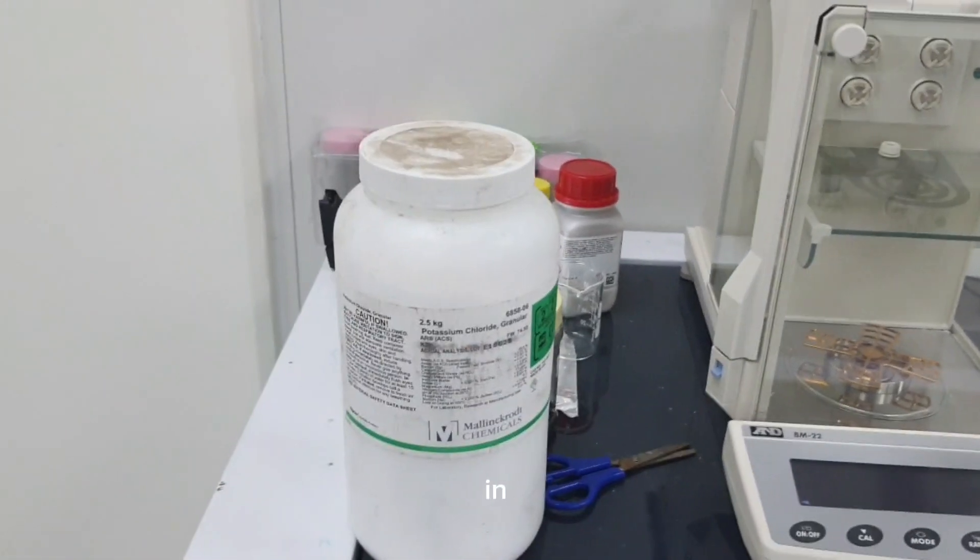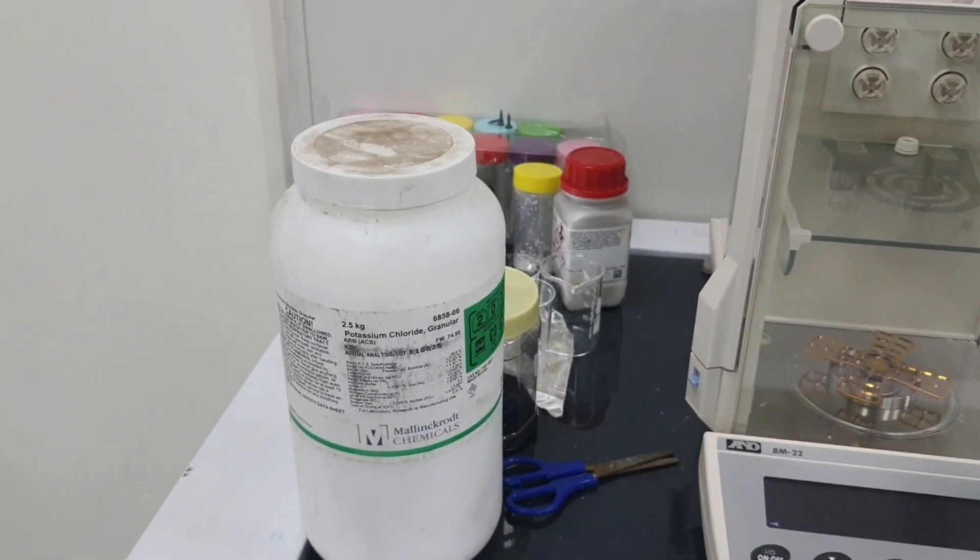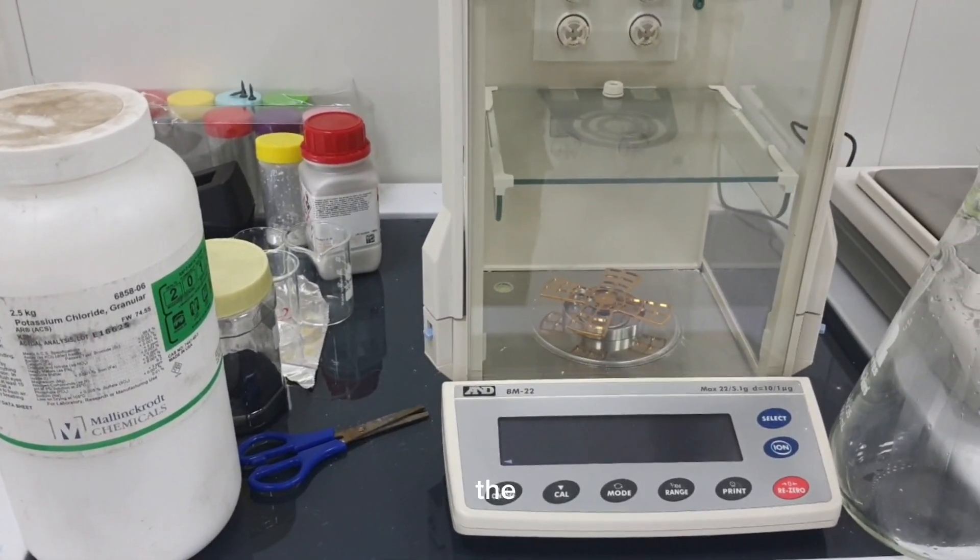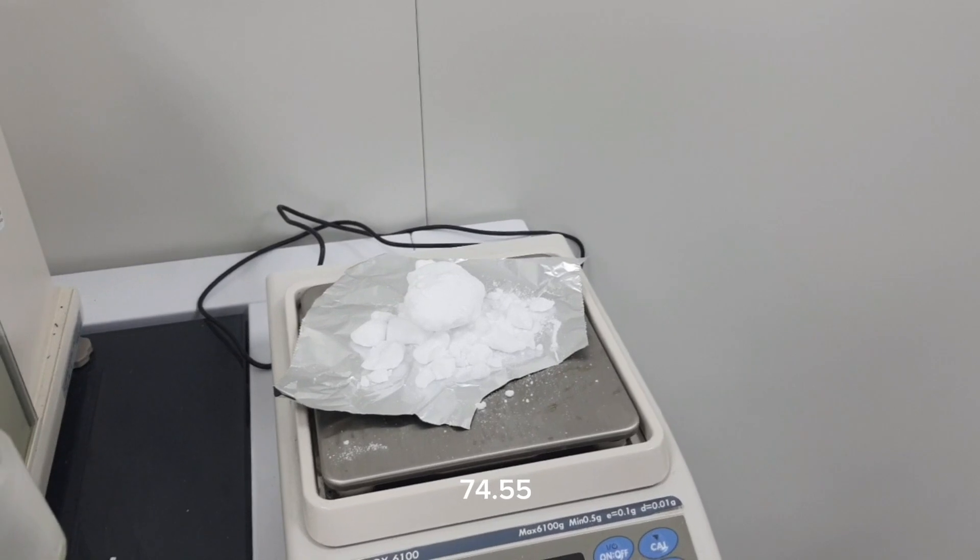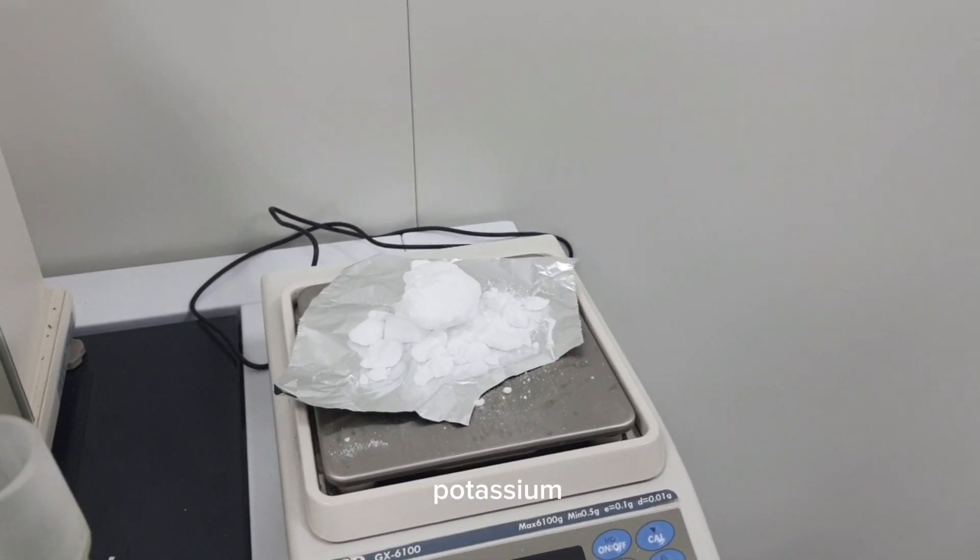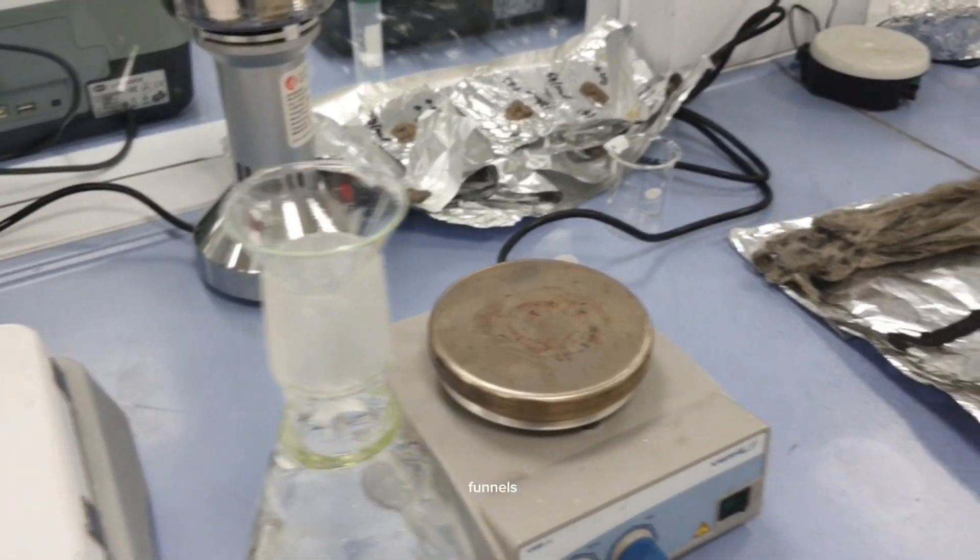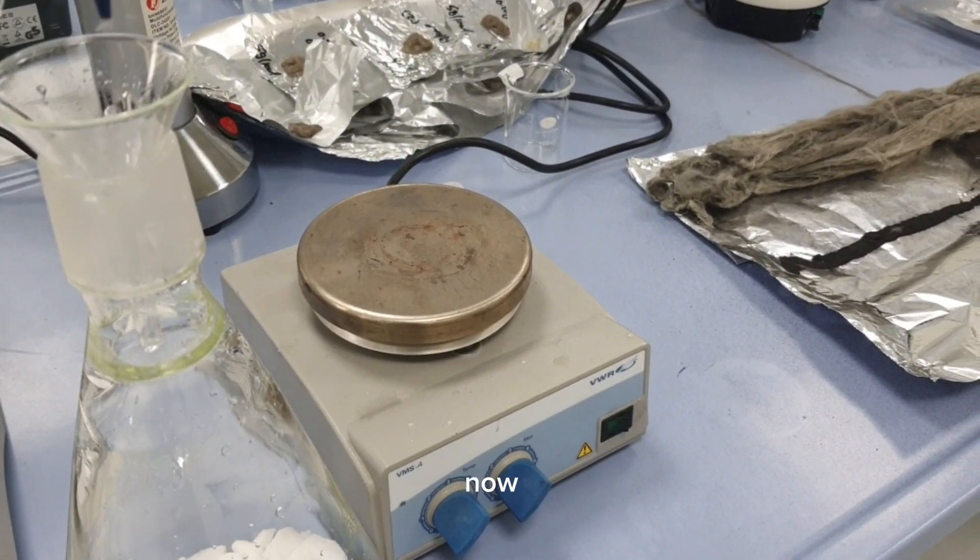Now we will weigh around 74.55 grams of potassium chloride. We will transfer this to the flask. For transferring I usually prefer funnels, so we have transferred it.